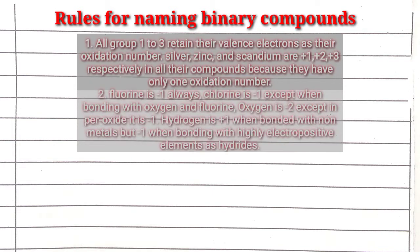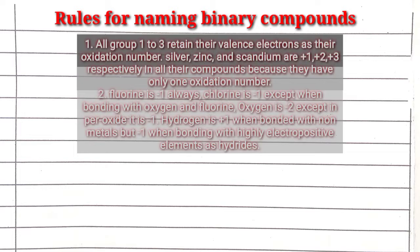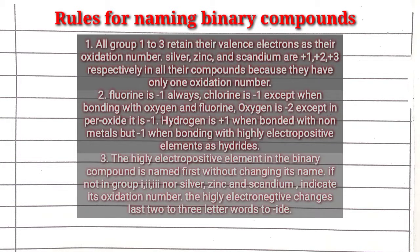Rule 2: Fluorine's oxidation number is always minus 1 in a compound. Oxygen's oxidation number is always minus 2 in a compound, except in peroxides where it is minus 1. Hydrogen's oxidation number is always plus 1 when bonded with non-metals, but when bonded with metals to form hydrides, it is always minus 1. The highly electropositive element in the binary compound is named first, indicating the oxidation state using Roman numerals in brackets — but only if it is not in group 1, 2, or 3. The last 2 to 4 letters of the highly electronegative element change to 'ide'.